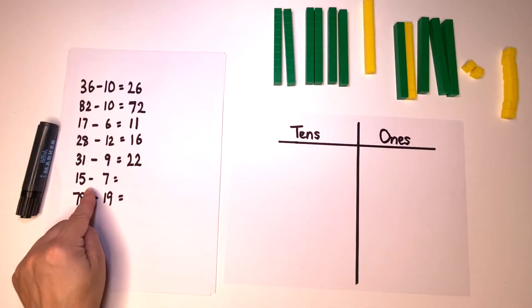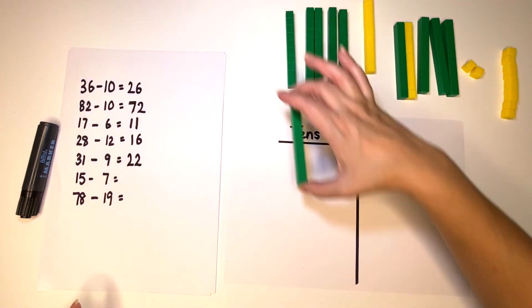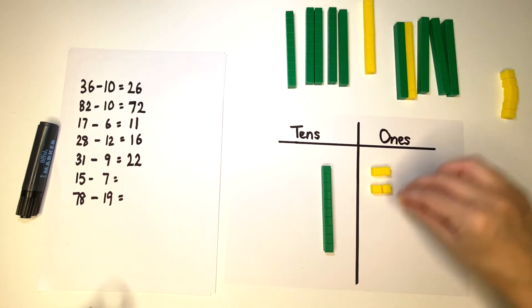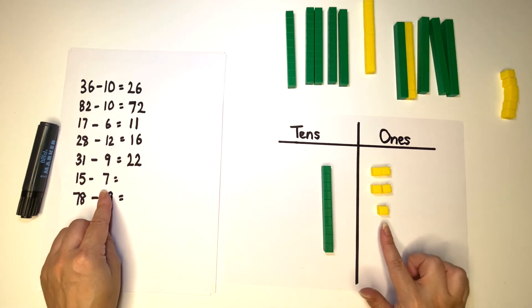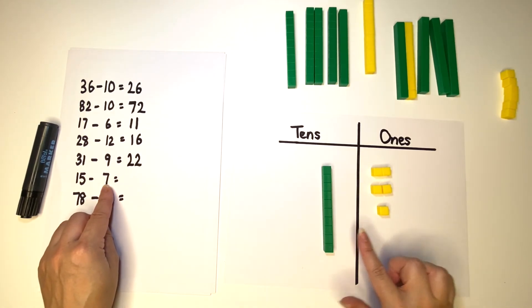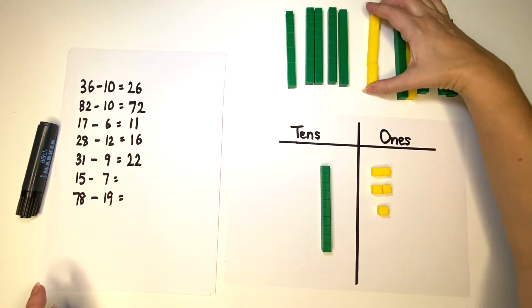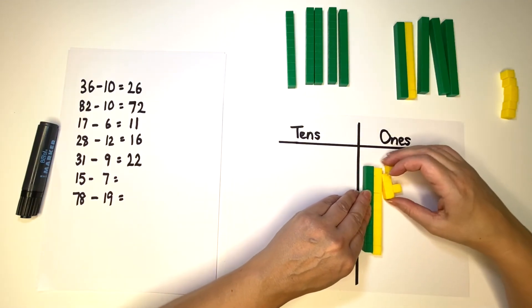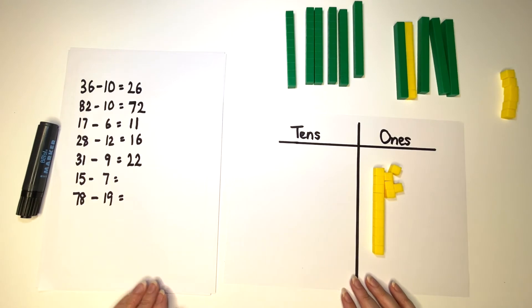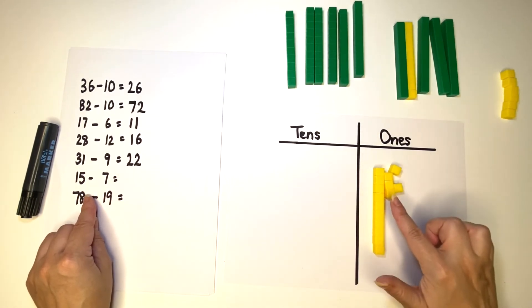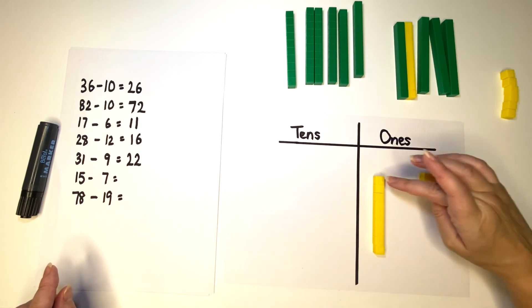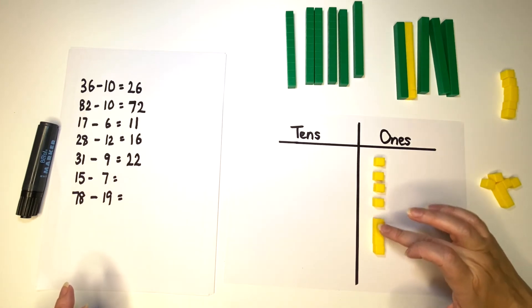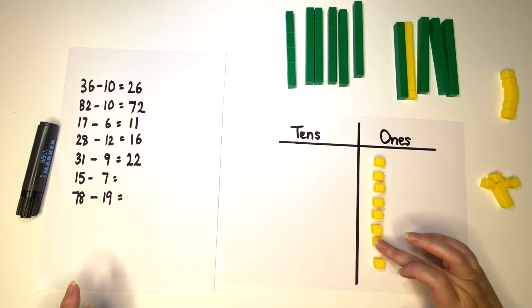Our next number sentence is fifteen minus seven. Again, we don't have enough ones to take seven away. So we're going to have to do an exchange. So ten ones, move them across. Remove the ten. So now we have fifteen, take away seven. That's five, six, seven. And our answer is one, two, three, four, five, six, seven, eight.